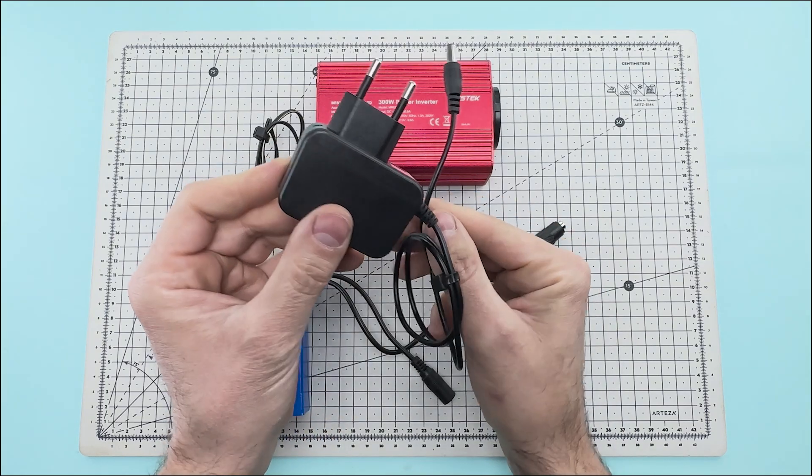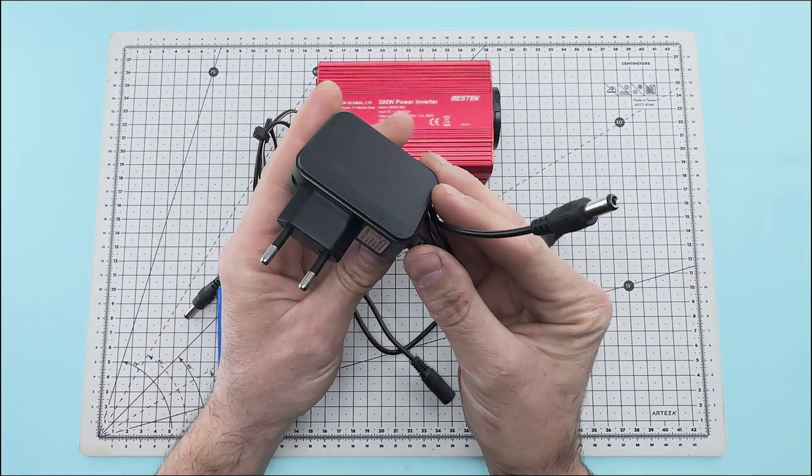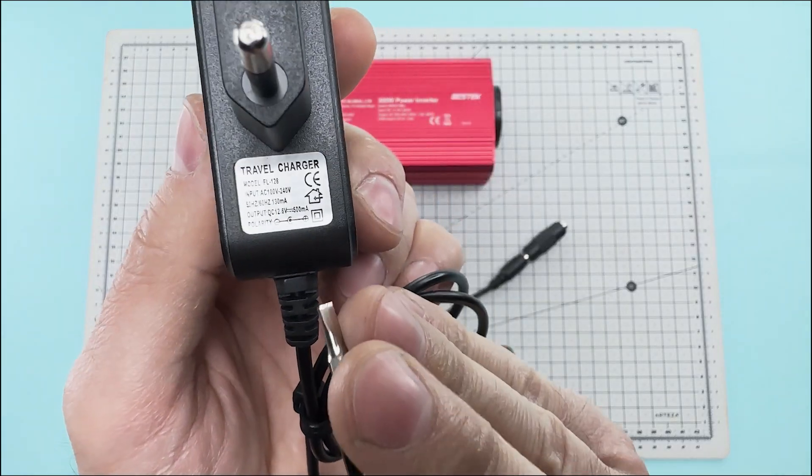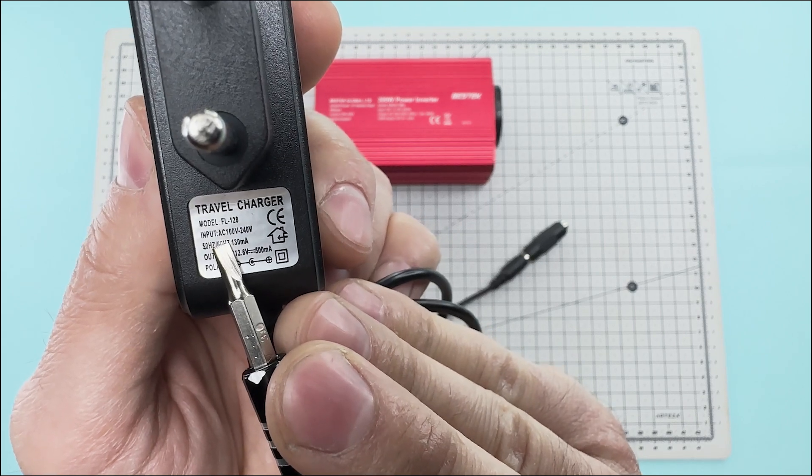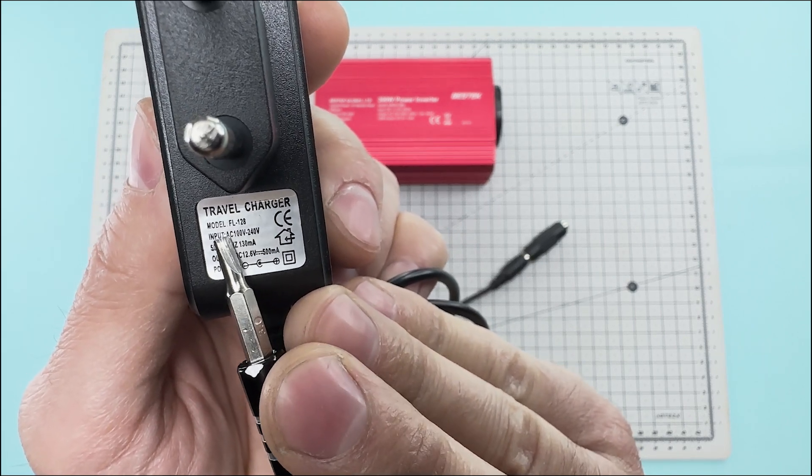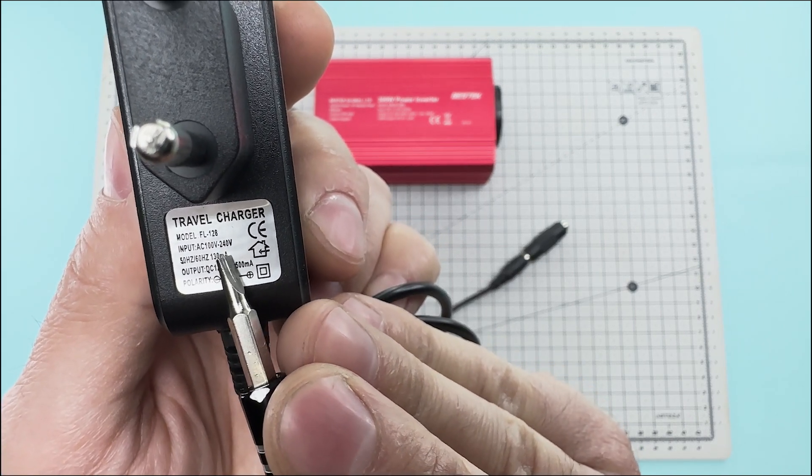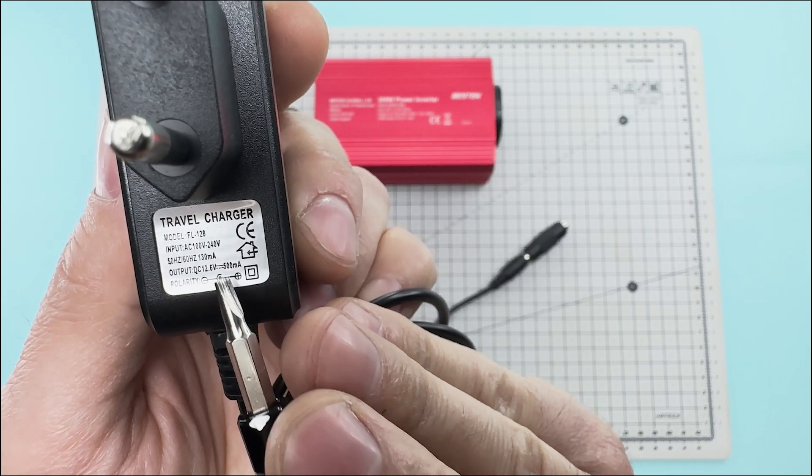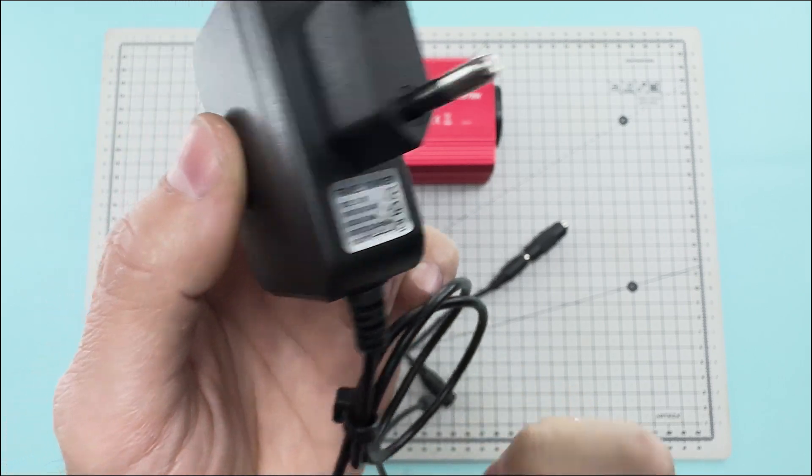This is the power supply we will use to charge the battery. This power supply operates at 220 volts of alternating current and a frequency of 50 hertz, and it has an output connector that provides a direct current of 12 volts.